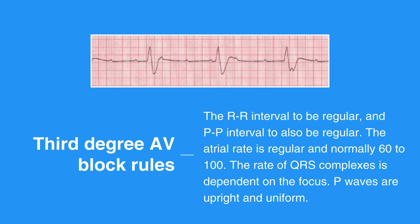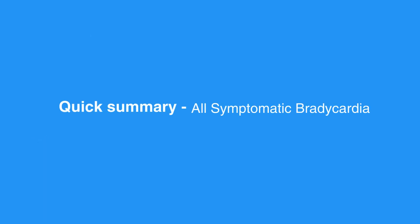There is not a QRS following every P wave. The PR interval can only be measured on conducted beats and is usually constant across the strip. It may or may not be longer than a normal PR interval, which is 0.12 seconds. The QRS complex interval may be normal but is more likely to be prolonged.